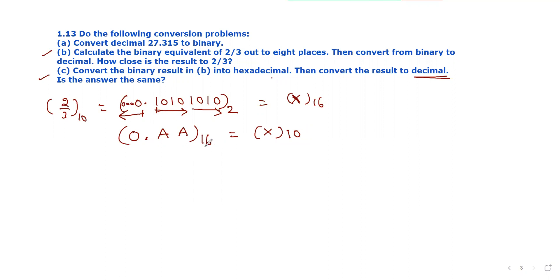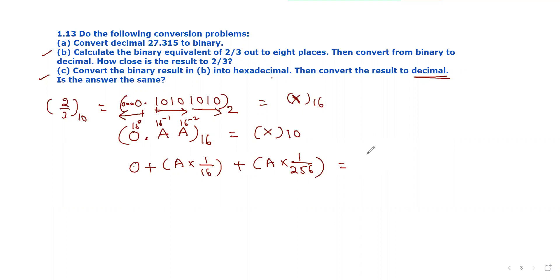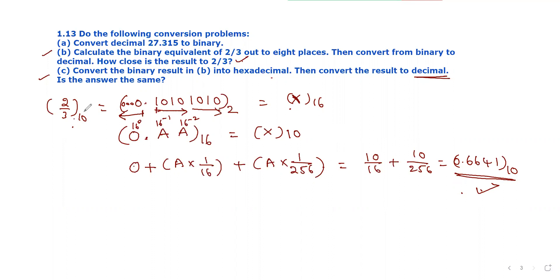We apply hexadecimal weights and multiply: 0 × 16^0, plus A × 16^-1, plus A × 16^-2. This gives 0 + 10/16 + 10/256 = 0.625 + 0.0390625 = 0.6641. This decimal equivalent value matches the earlier result, confirming that 2/3 ≈ 0.6641 from both binary and hexadecimal conversion.